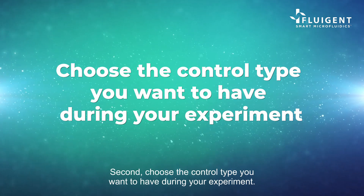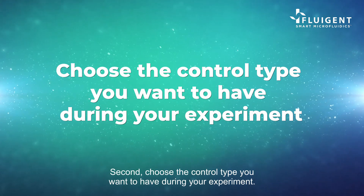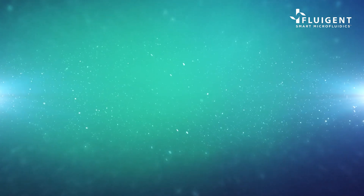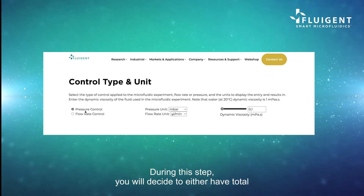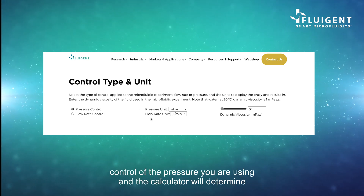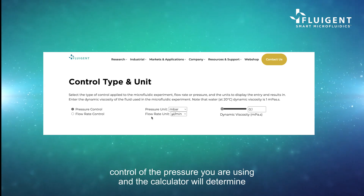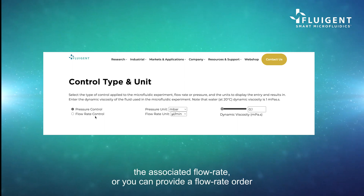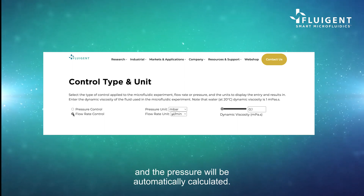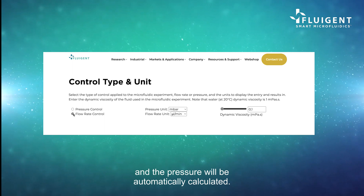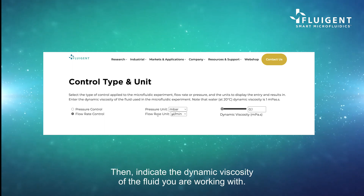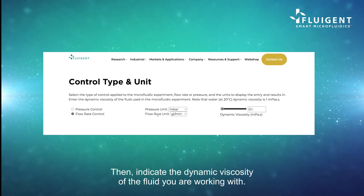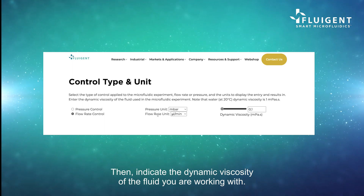Second, choose the control type you want to have during your experiment. During this step, you will decide to either have total control of the pressure you are using and the calculator will determine the associated flow rate, or you can provide a flow rate order and the pressure will be automatically calculated. Then, indicate the dynamic viscosity of the fluid you are working with.